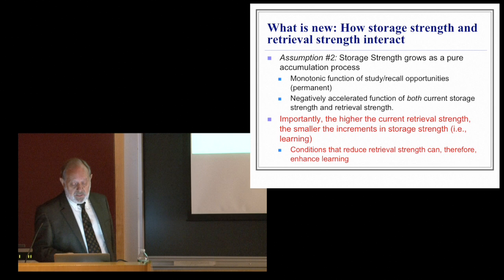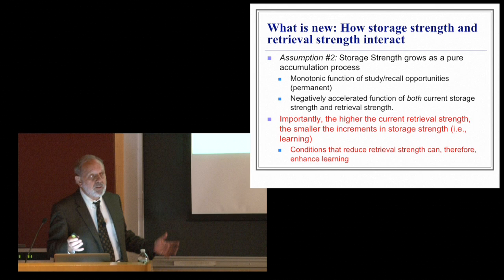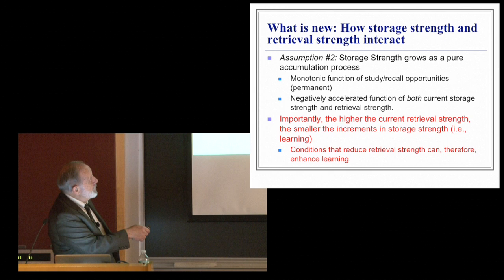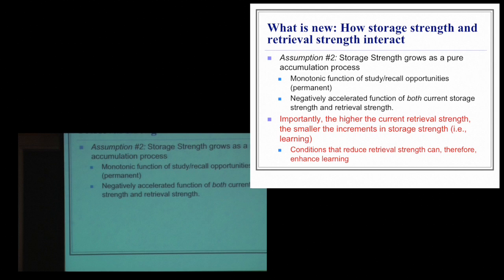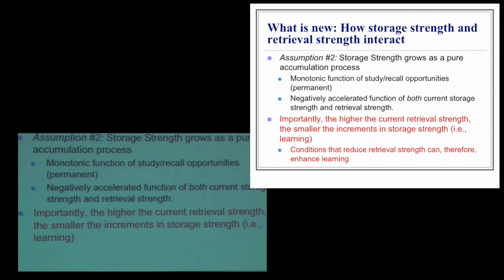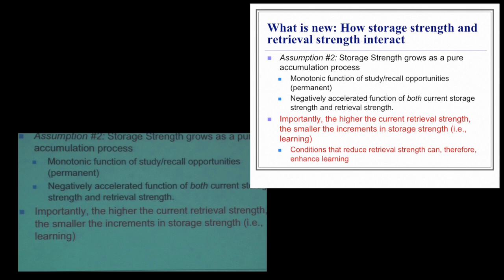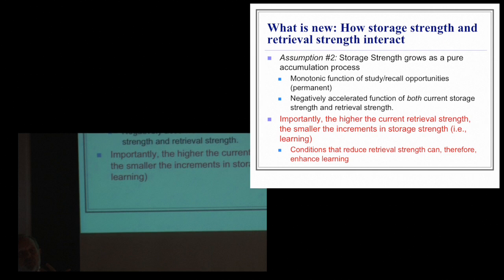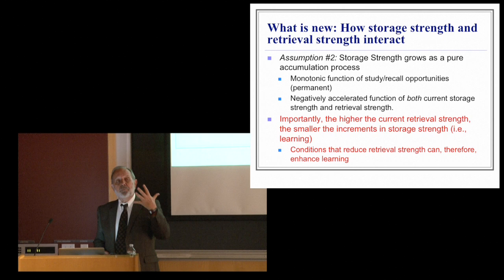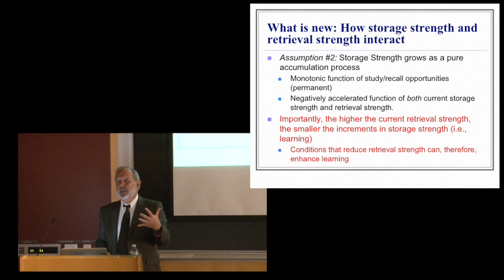So quickly, what's new is how they interact. And storage strength, we assume, grows purely, is never lost once it's accumulated. And it's a negatively accelerated function of current storage strength. The more you have, the less you can increase. And counter-intuitively, the higher the current retrieval strength is, the less the increase you can get in storage strength. This is where, in the framework, forgetting becomes necessary to reach a new level of learning. If no forgetting in the retrieval strength sense has happened, no additional storage strength will be accumulated. Something that's completely accessible is sort of unlearnable in the sense of getting to another level of learning beyond what you've already achieved.